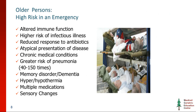Older persons are at high risk in an emergency because they can experience altered immune function from stress as well as from exposure to environmental conditions. They're at higher risk for infectious illnesses, have a reduced response to antibiotics, and may have atypical disease presentation compared to the rest of the population — especially in a shelter situation. Multiple chronic medical conditions are common. It's staggering that they're at 40 to 150 times greater risk of pneumonia.